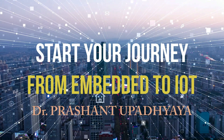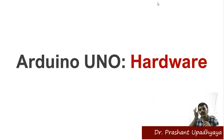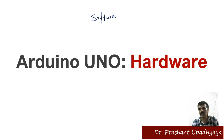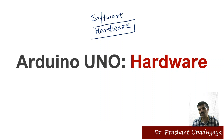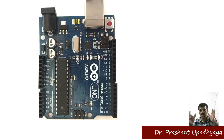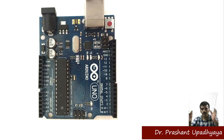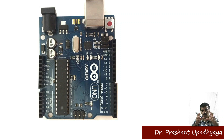Welcome to this course on starting your journey from embedded to IoT. We will be talking about the Arduino UNO hardware. The Arduino is both software and hardware, but first we will talk about the hardware. This is the board we will be using to make our small projects — the Arduino UNO board, with the Arduino name and symbol visible on it.